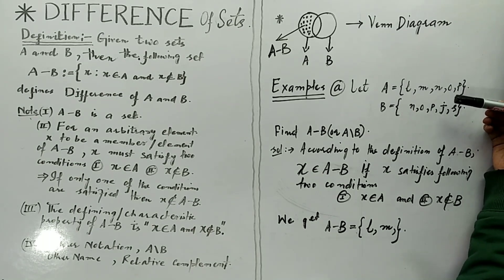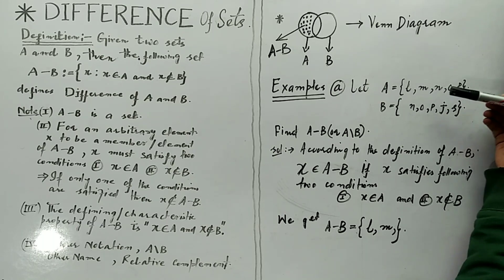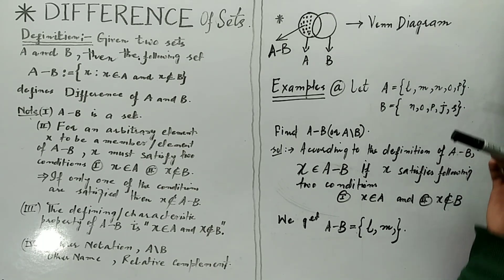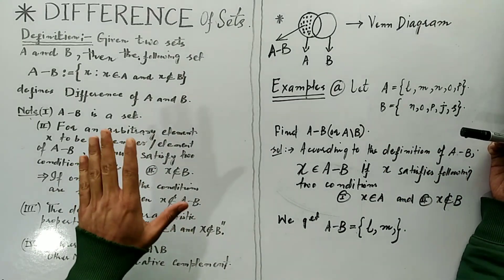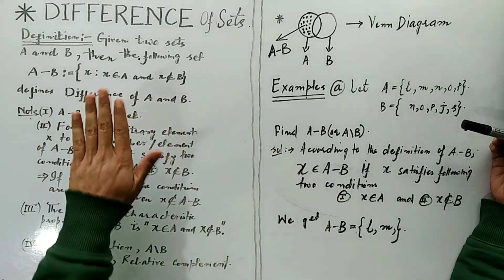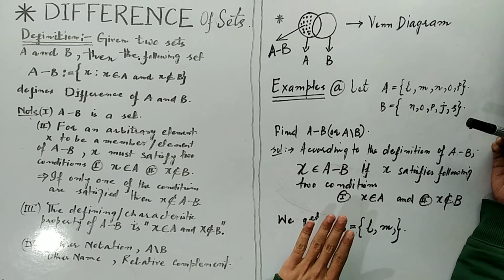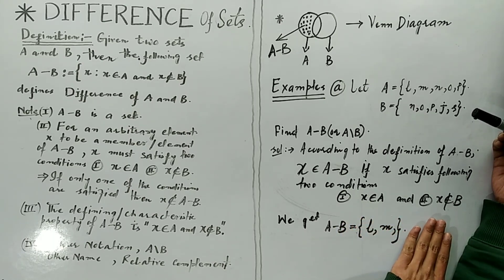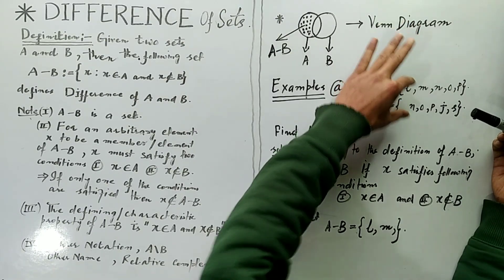Here is an example to apply the definition of the difference of two sets. Suppose my first set is A = {L, M, N, O, B} and my second set is B = {N, O, P, J, S}. I want to find A minus B, or the complement of B with respect to A. According to the definition, an element belongs to A minus B if it satisfies two properties: it must belong to A, and it must not belong to B.